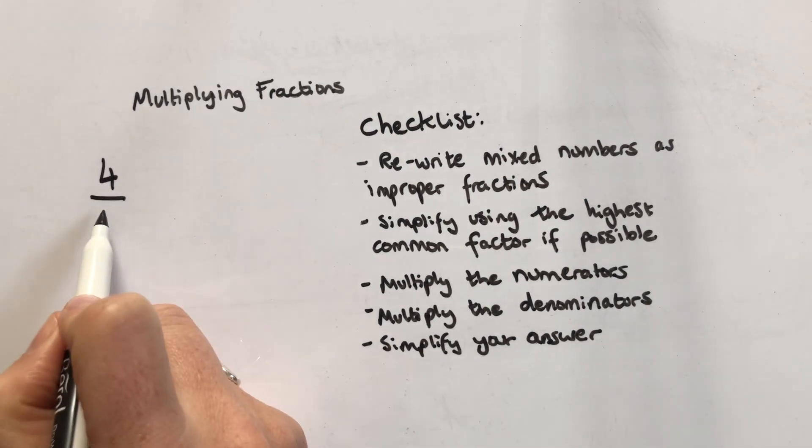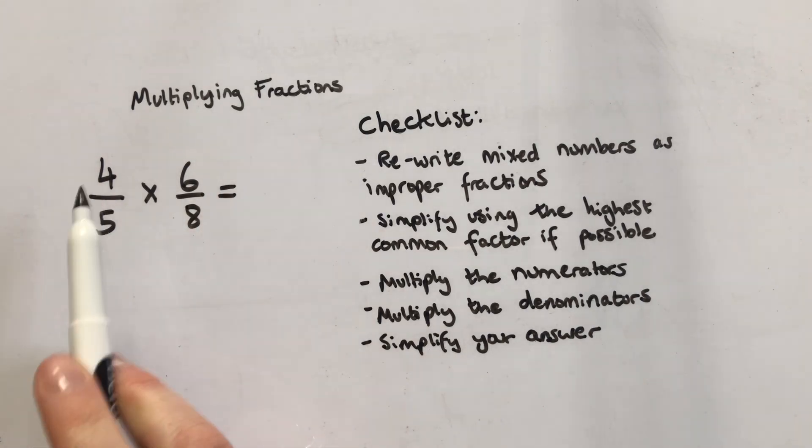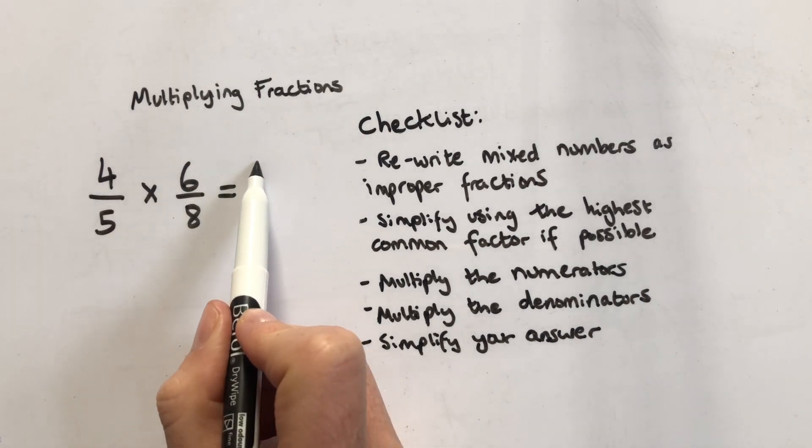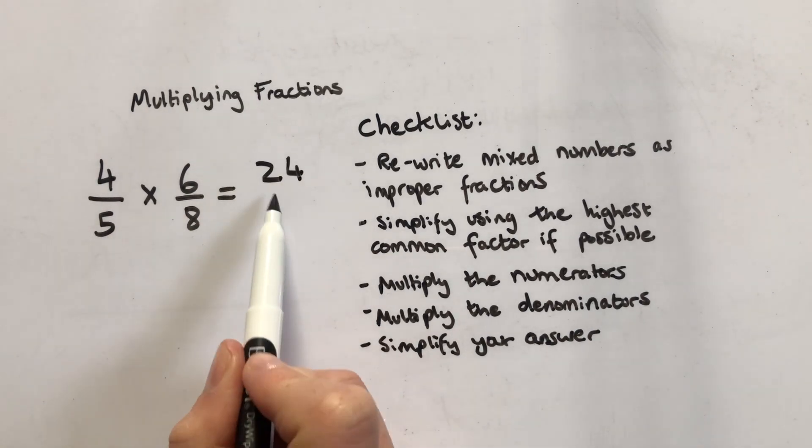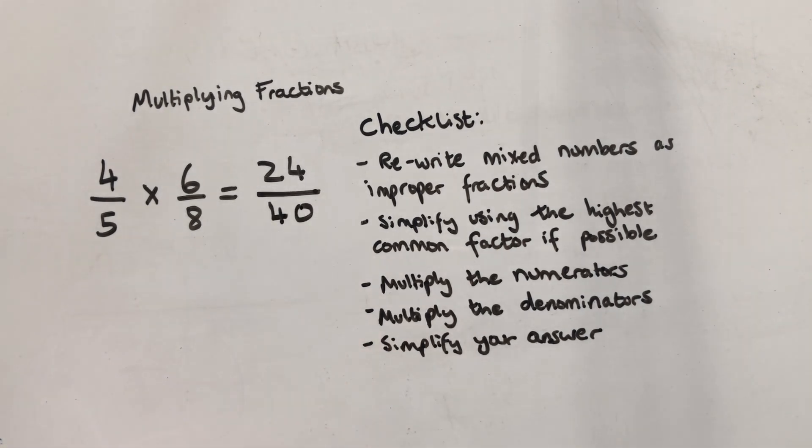For example four fifths times six eighths. Multiply top and bottom so four times six equals twenty four, five times eight equals forty. Then I could simplify it to its simplest form which would be six tenths.